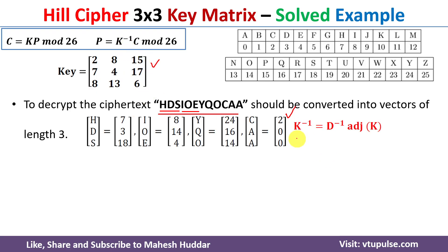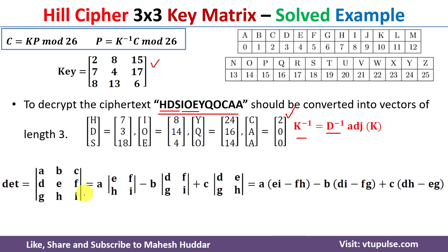The inverse of the key matrix is calculated as K⁻¹ = (1/det(K)) × adj(K), where det(K) is the multiplicative inverse of the determinant. The determinant of a 3×3 matrix is found by expanding along the first row: for element a, remove its row and column and take the determinant of the remaining 2×2 submatrix. The signs alternate as +, −, + for the first row.